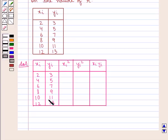We are given the distribution as follows. Now we shall find xi square, yi square and xi into yi.